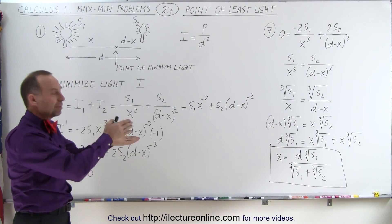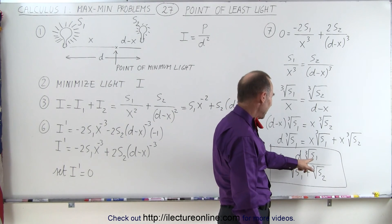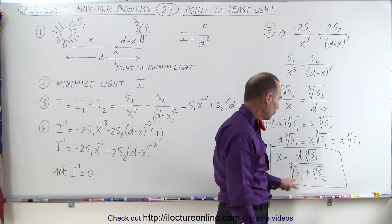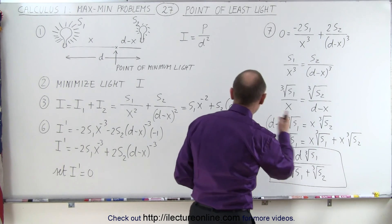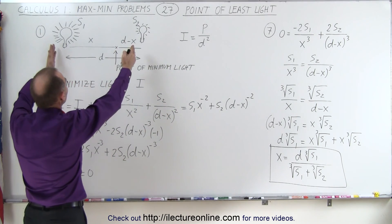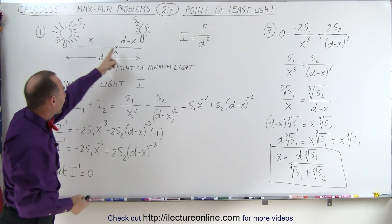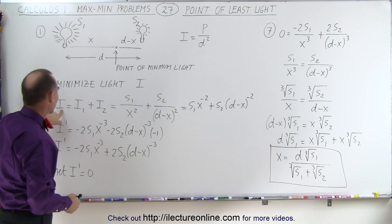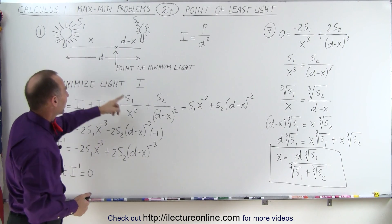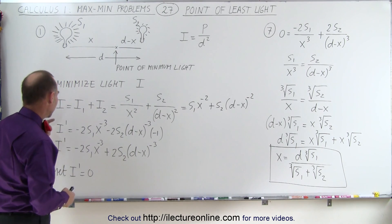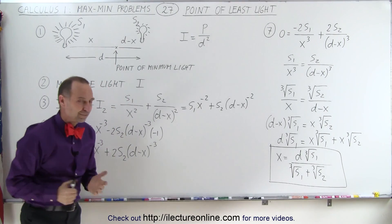Kind of an interesting problem. That doesn't mean much without numbers, but notice that if S1 is larger than S2, this fraction will be greater than one half. If S1 is smaller than S2, this fraction will be smaller than one half. So you get a relative position depending upon the cube root of the intensity of the two sources. In summary: we minimized the total light intensity between two sources, writing I as S1 over x squared plus S2 over d minus x squared, taking the derivative, setting it equal to zero, and the key trick was taking the cube root of both sides to isolate x.